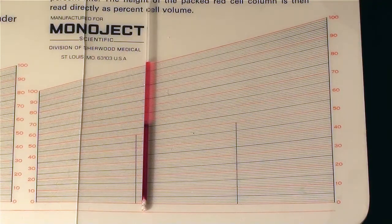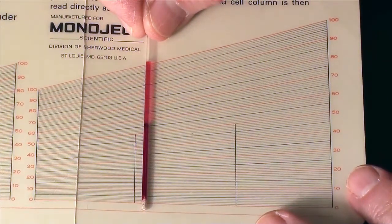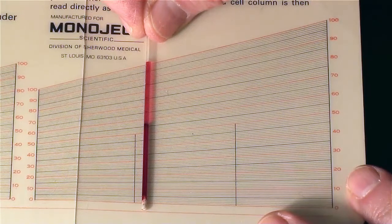Let's take a look at the hematocrit results. The hematocrit tube has been centrifuged. We're now analyzing it with this card.